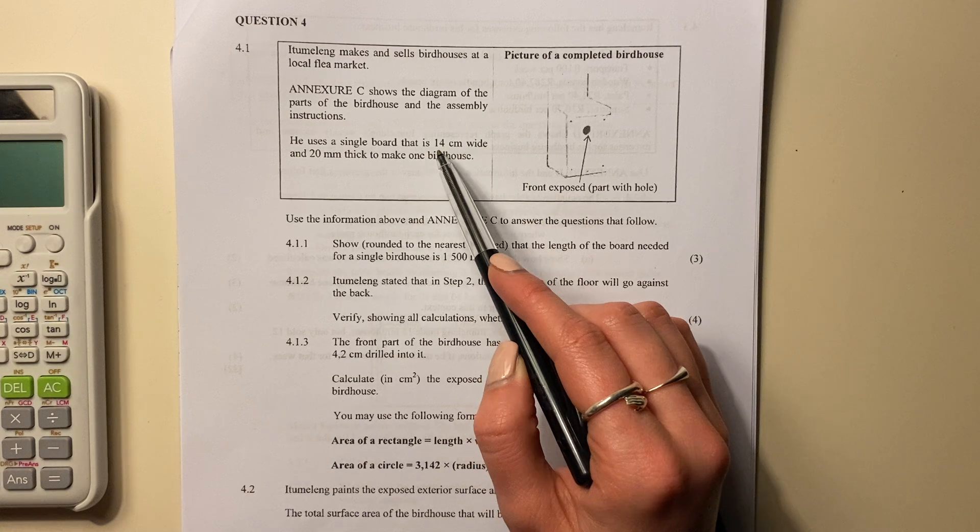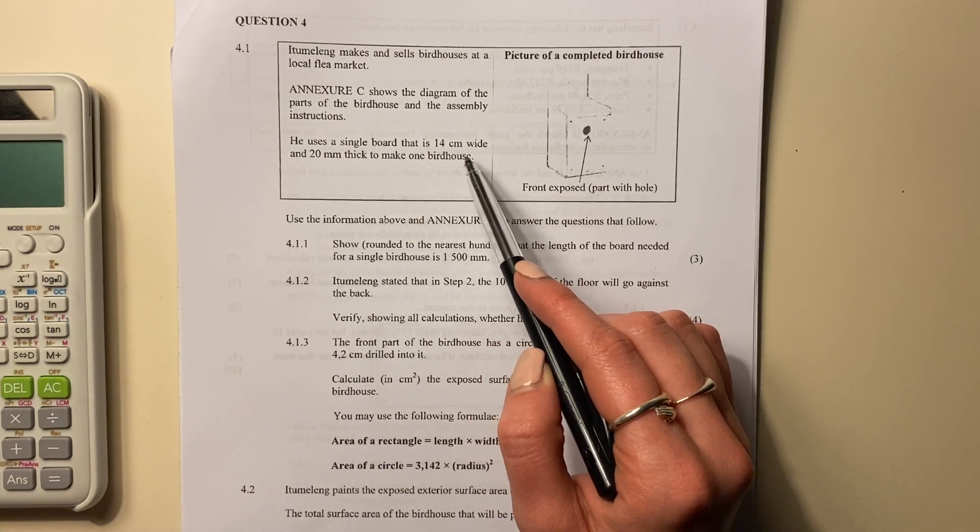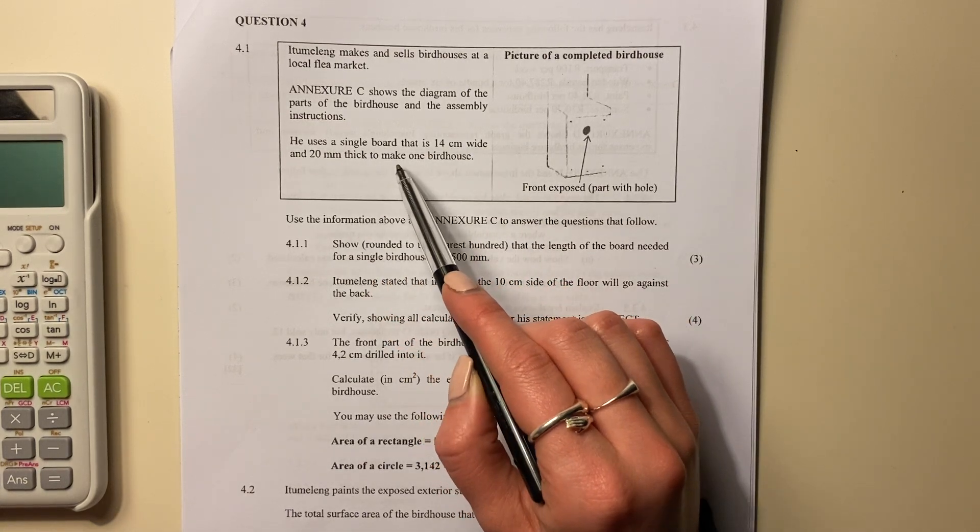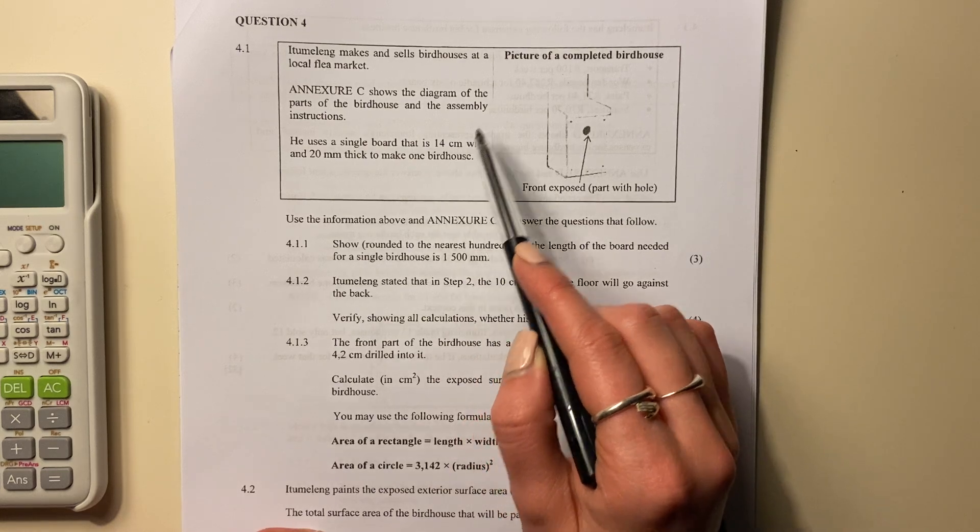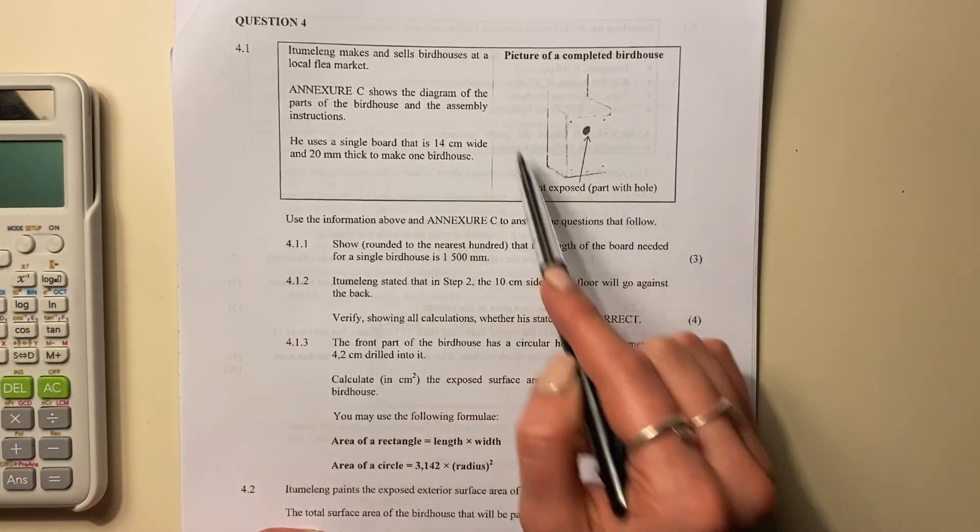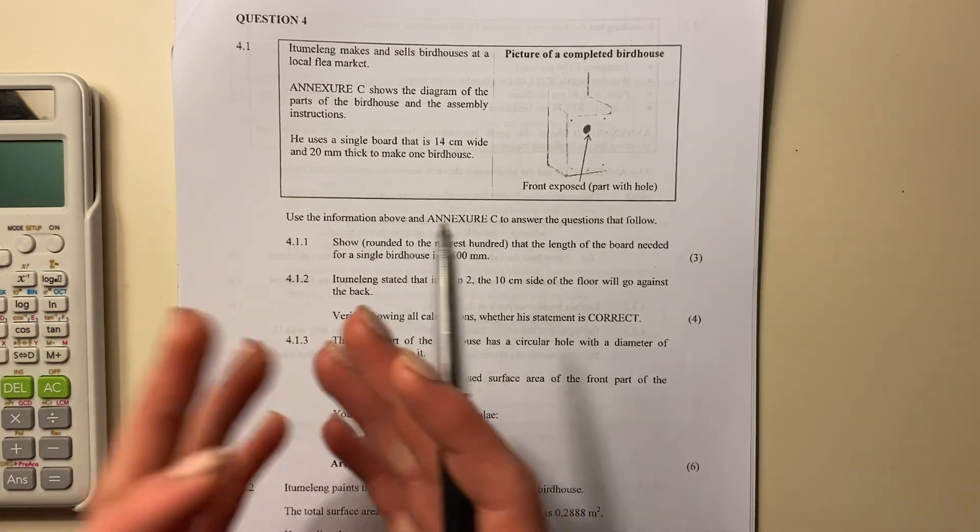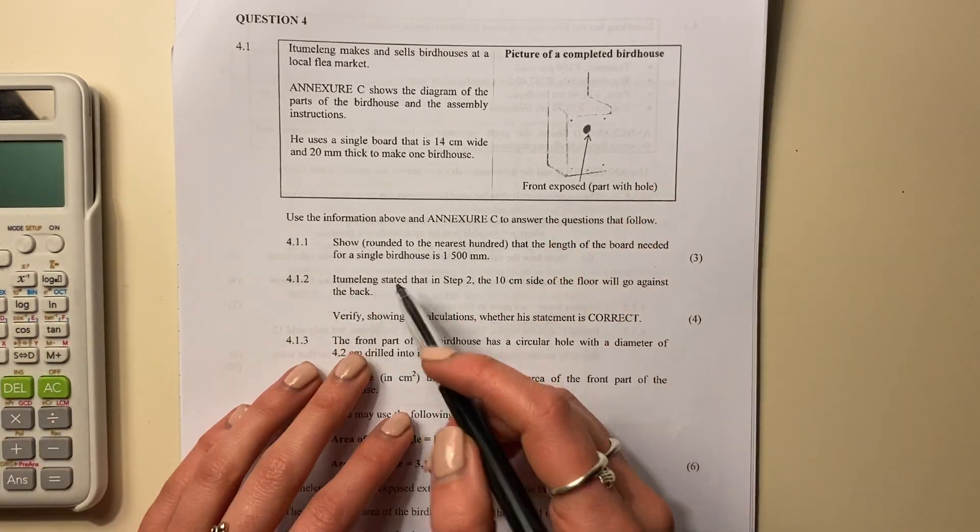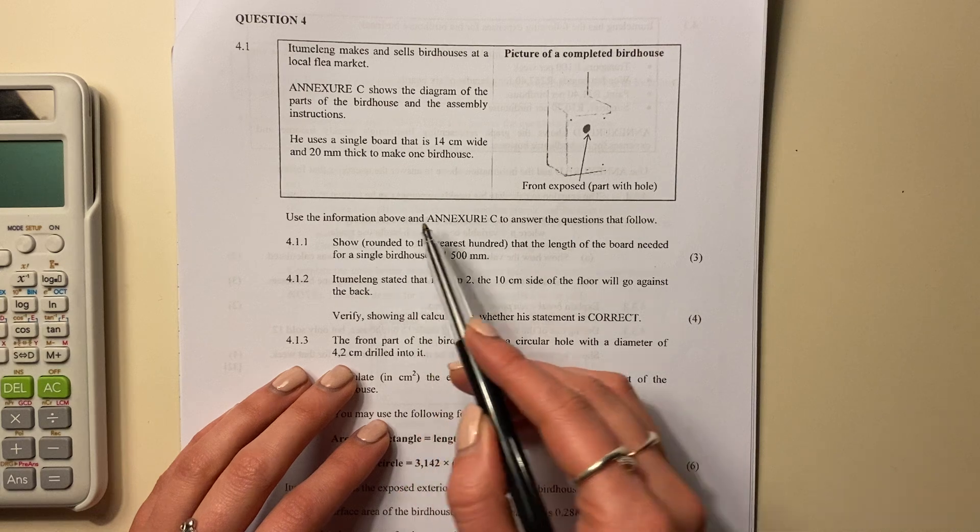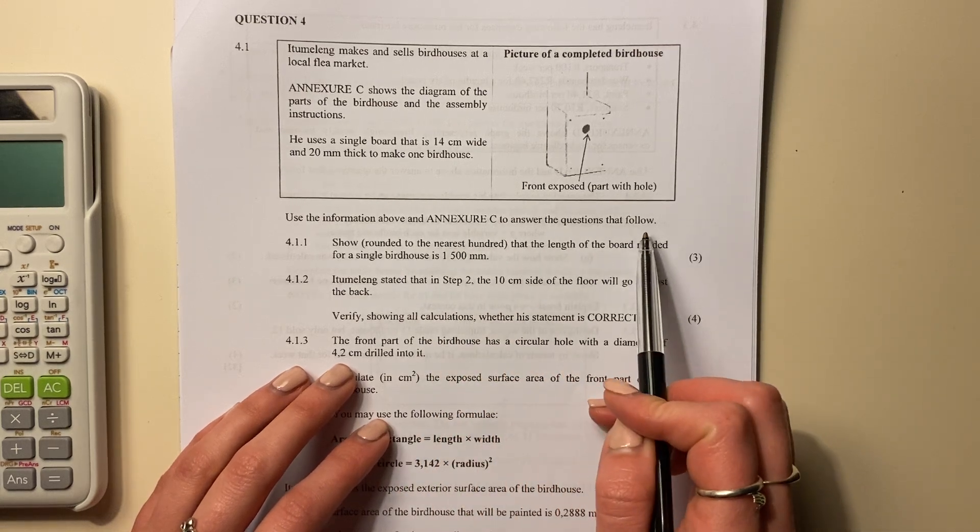He uses a single board that is 14 centimeters wide, right, and 20 millimeters thick to make one birdhouse. So this is a picture of a completed birdhouse, right? Because remember, he is using this board to create these birdhouses. So it says use the information above and Annex C to answer the questions that follow.